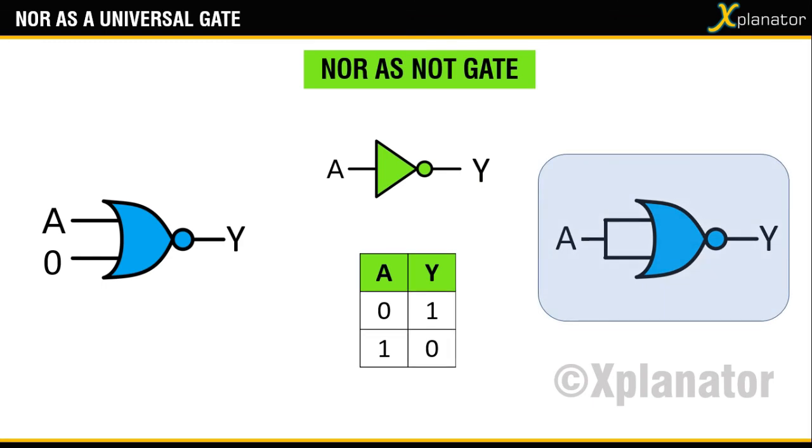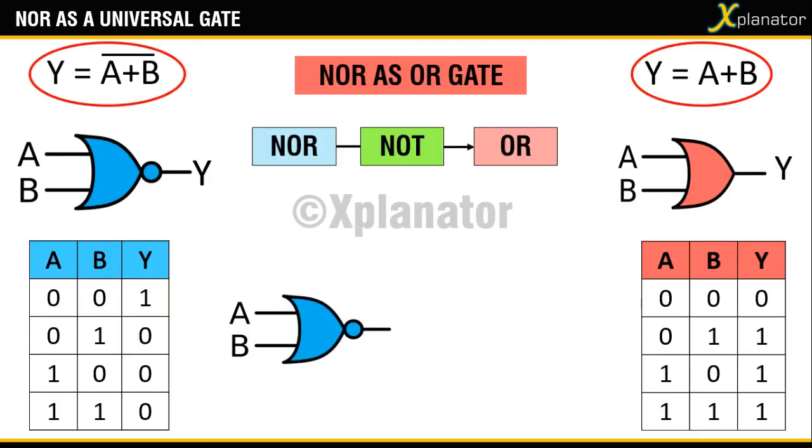Now, using that information, draw a NOR gate which is shown in blue. Connect its output to a NOT gate which is shown in green. And the resultant output is going to be an OR gate.